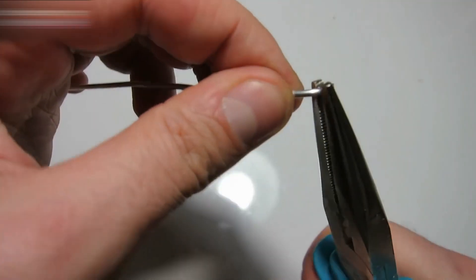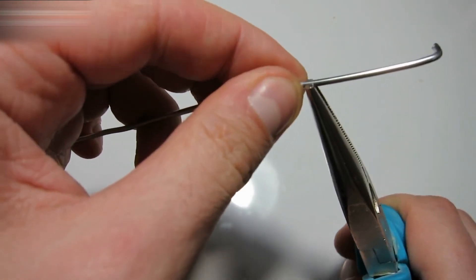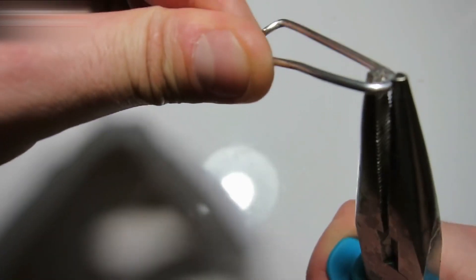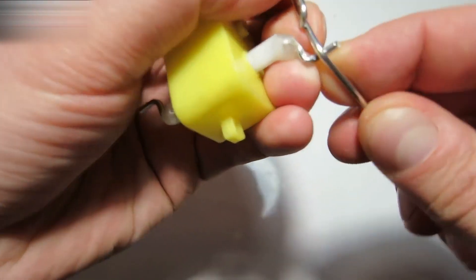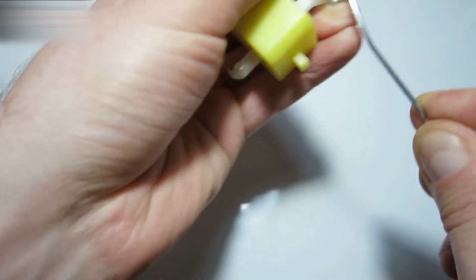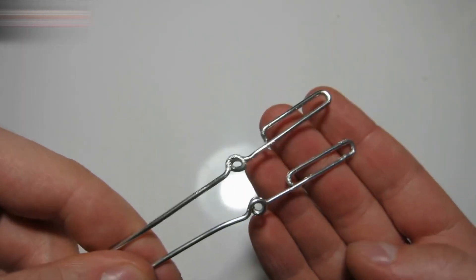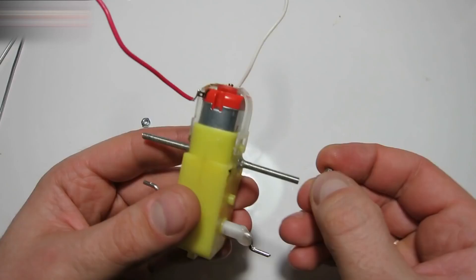Now, take the wire. You should have two pieces of wire bent in this form.